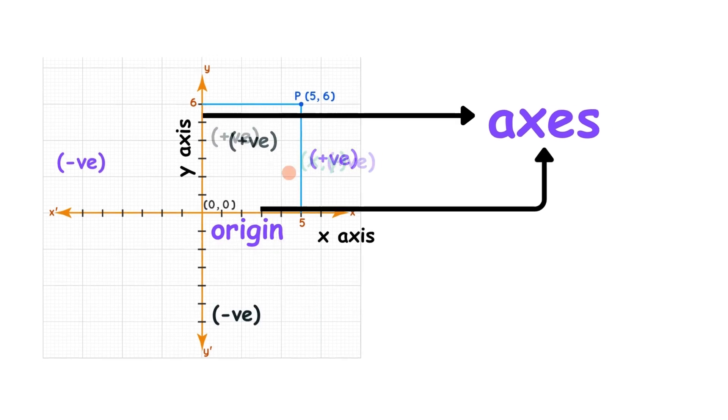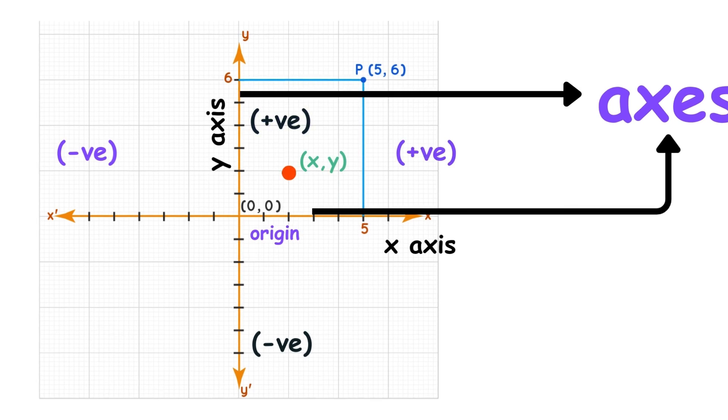A point can be written in Cartesian coordinates as x, y, where the variables x and y are coordinates,